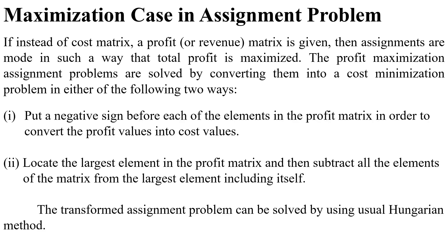The first way is to put a negative sign before each element in the profit matrix to convert the profit values into cost values. The second way is to locate the largest element in the profit matrix and then subtract all the elements of the matrix from that largest element, including itself. This transformed assignment problem can then be solved using the usual Hungarian method.